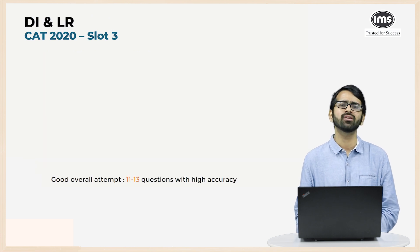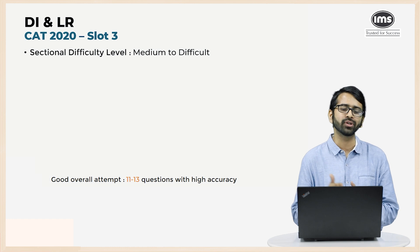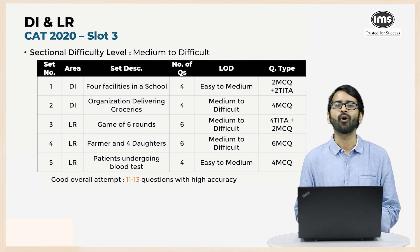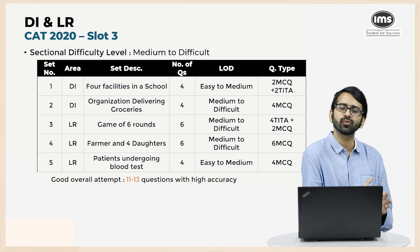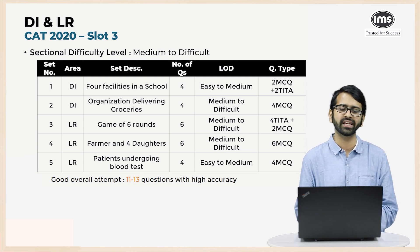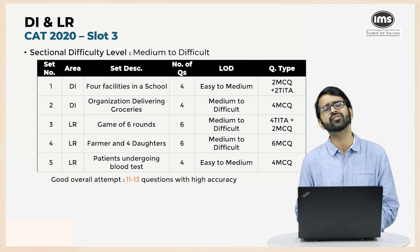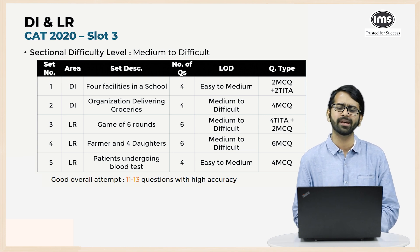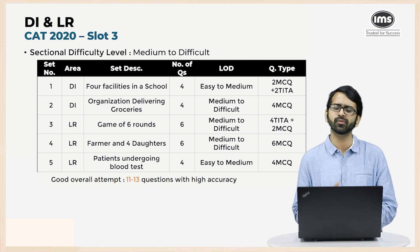Moving to the DILR section, which was medium to difficult. The first set was a DI set on Venn diagrams around four facilities in a school — four questions, easy to medium, a must-attempt set with two TITA and two MCQ questions. The second set was a DI set around an organization delivering groceries with four questions — much more difficult than the other four-question sets and classified as medium to difficult, with all four questions being MCQs.